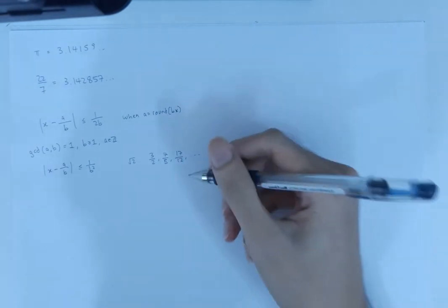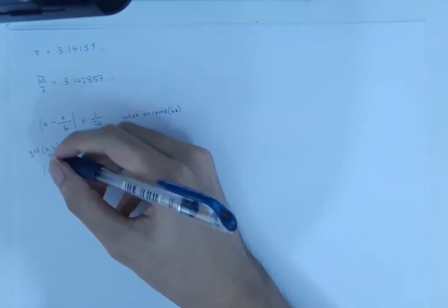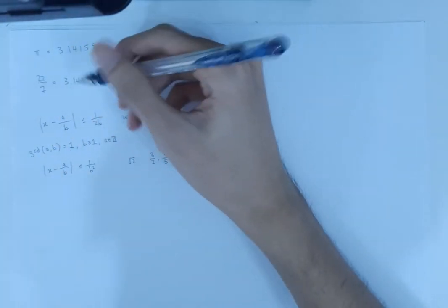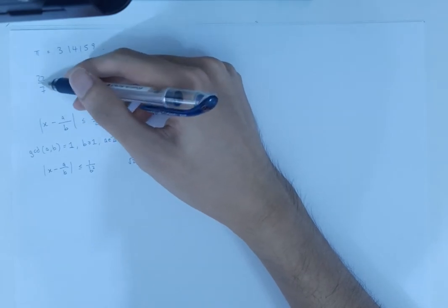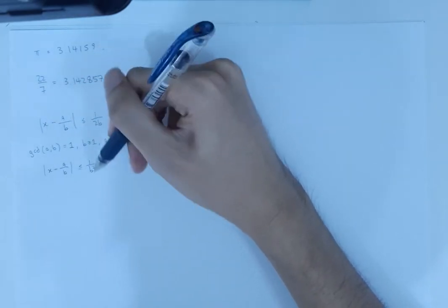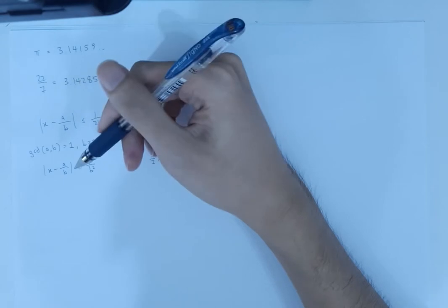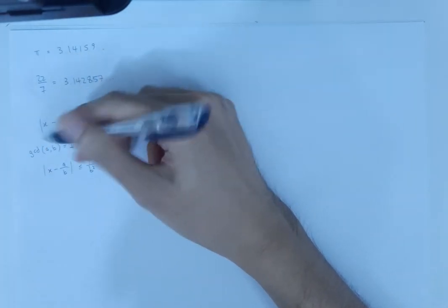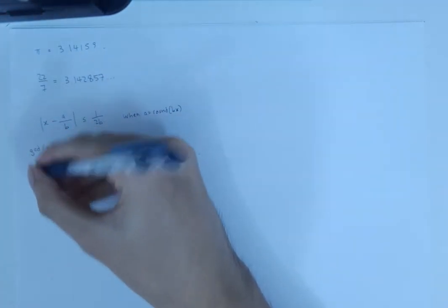I did not prepare that ahead of time so I don't remember. And we can verify that this 22 over 7 does happen to satisfy this stricter error bound compared to the garden variety rational approximations.